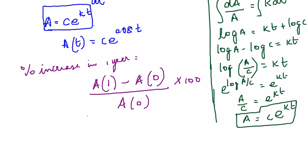So this is how we usually calculate the increase in the amount in a year. I will repeat the formula again. So it is your amount that was there at the end of one year minus the amount that was there initially, divided by the amount that was present initially, into hundred.